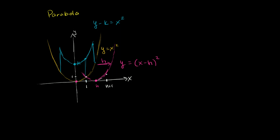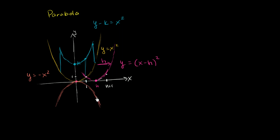Now let's think about the curve y is equal to negative x squared. Whatever the value of x squared is, we take the negative of it. So no matter what x we take, we squared it to get a positive value, but now we always get a negative value after multiplying by negative 1. It's going to be a mirror image of y equals x squared, reflected over the horizontal axis.